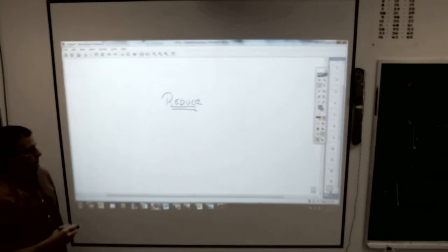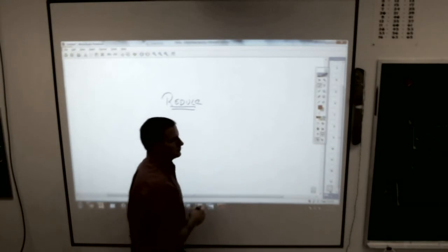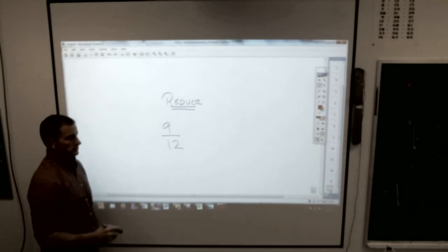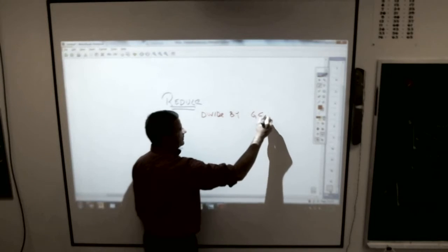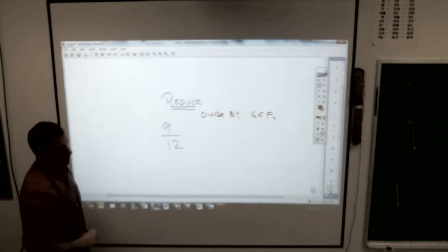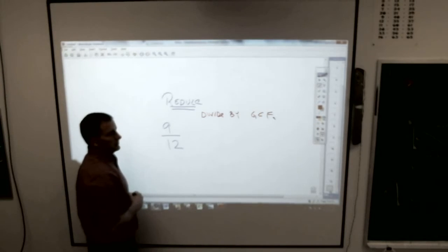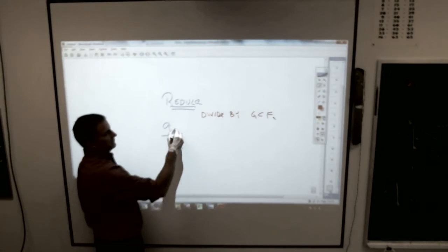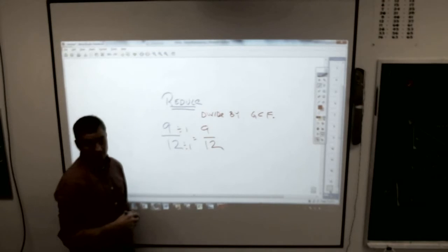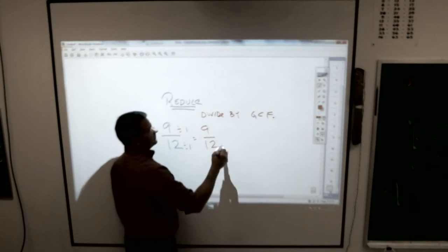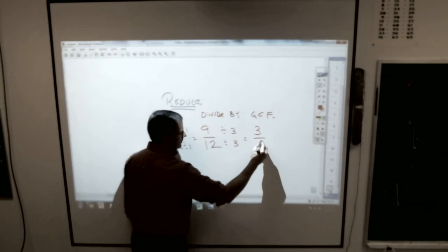If you have a fraction such as nine over twelve, how do you reduce that? You always want to try to divide by the greatest common factor. Not that you have to. You can always divide by a common factor, but you always want to try to divide by the greatest common factor. For example, nine and twelve, I could divide them by one, but that's not going to get me anywhere, is it? What other common factors do they have? Zachary? Three. Divide by three, divide by three, and you end up with three-fourths.